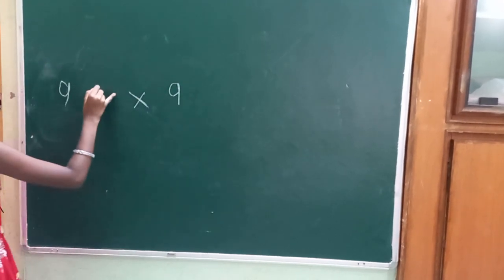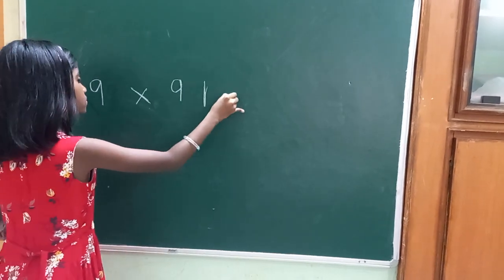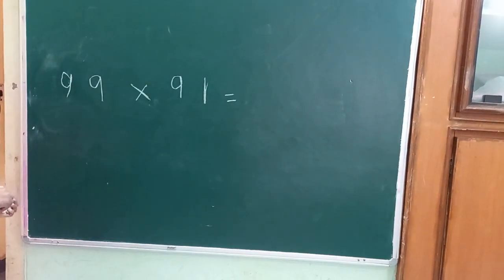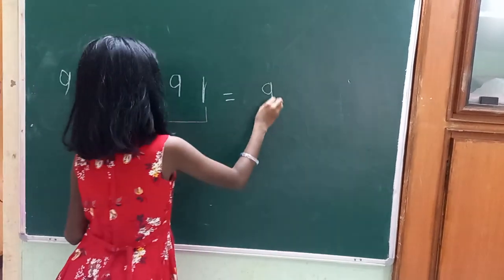And here let's take nine and one. The process is the same. Nine multiplied by one is nine.